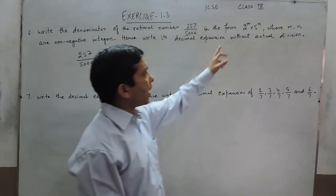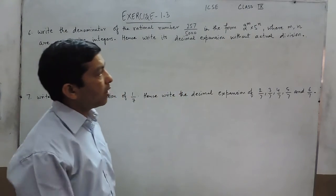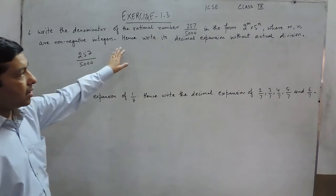In the form of 2 to the power m into 5 to the power n, where m and n are non-negative integers. Hence,